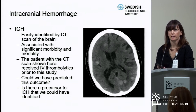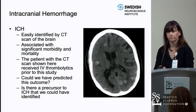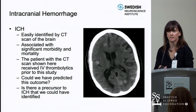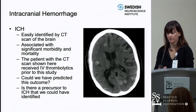Intracranial hemorrhage is associated with significant morbidity and mortality. The patient who had this head CT had received IV thrombolytics before the CT scan was done. My question is: could we have predicted this outcome in this patient? Was there a precursor to this ICH that could have been identified?